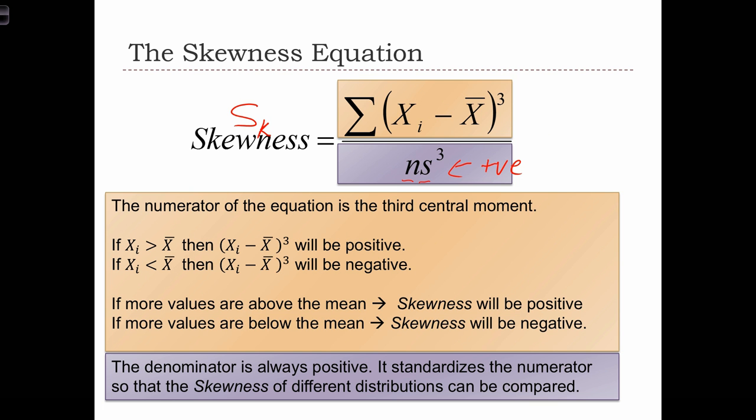and the standard deviation is always positive. So we've got a positive times a positive, and the positive is cubed, so it's a few positives all multiplied together. The bottom is always going to be a positive number.